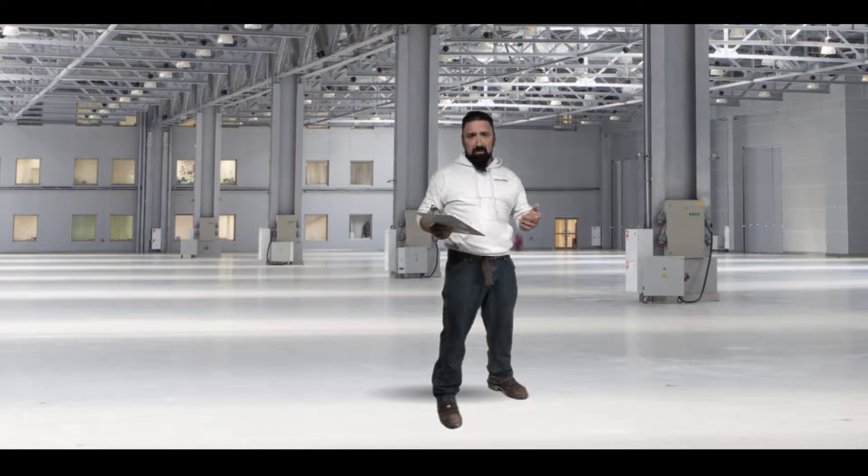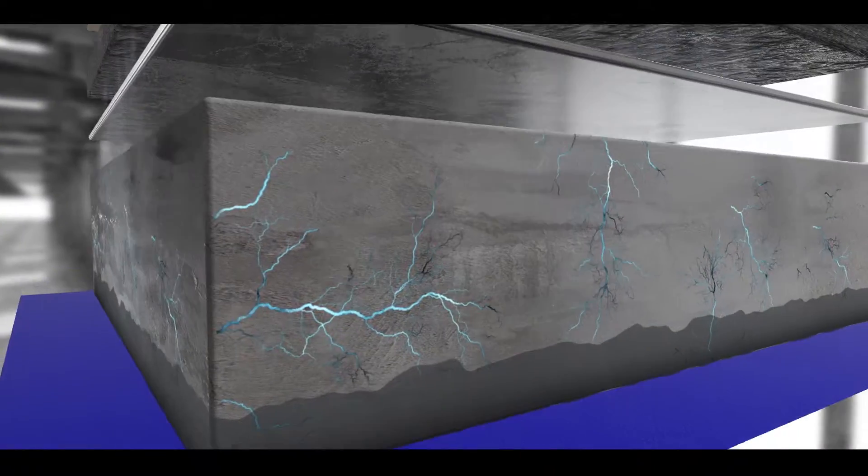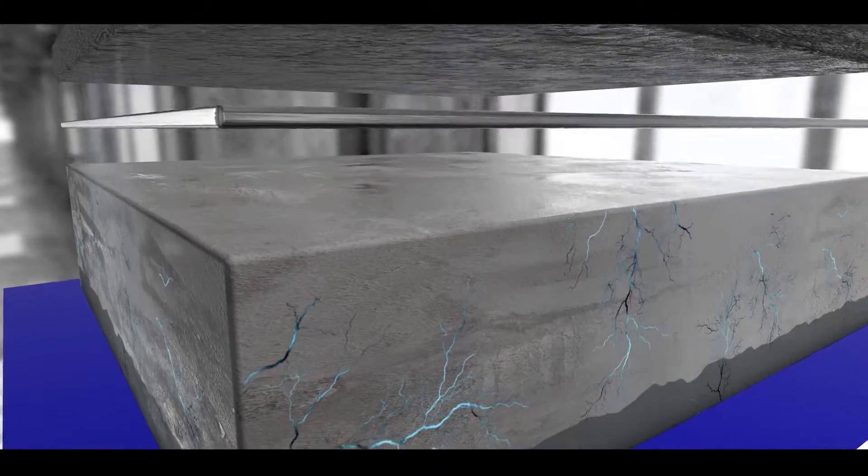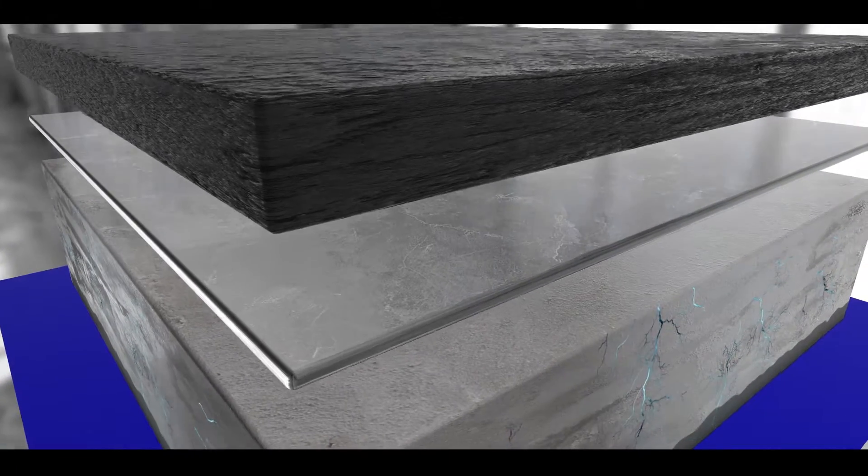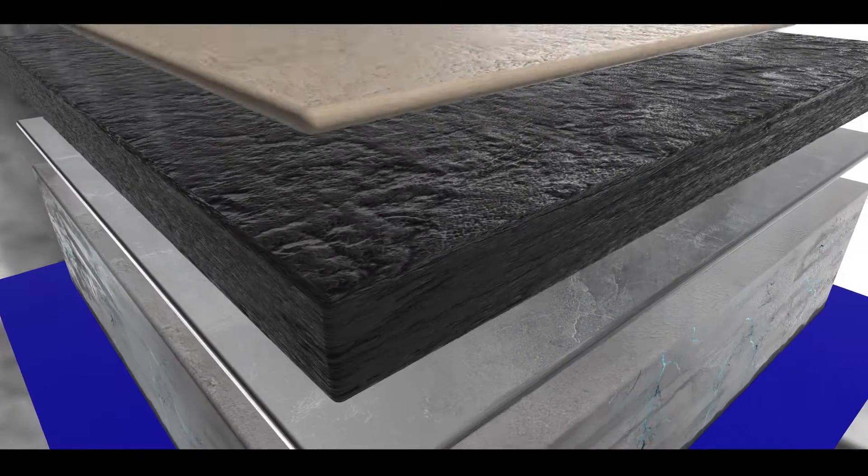Moisture mitigation systems will keep your carpet glued down. It will keep your expensive tile floor from delaminating. Advances in epoxy formulations allow us to offer moisture mitigation systems that can be effective under virtually all types of flooring.